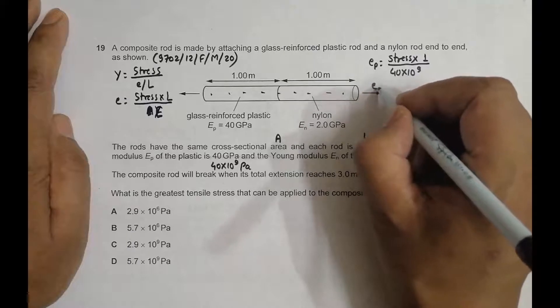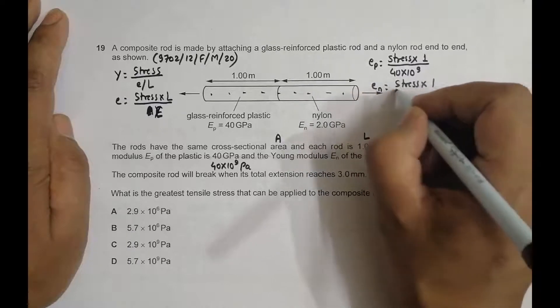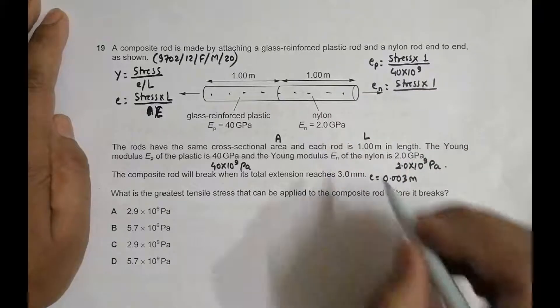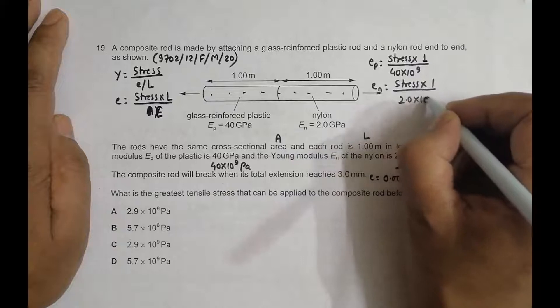Similarly, for nylon, en = (stress × L) / (En × A). The stress and length are the same, but the Young's modulus is different at 2.0×10⁹ Pa.